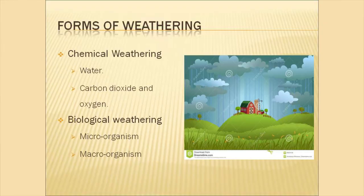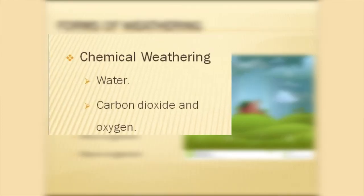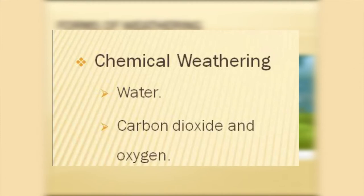Chemical weathering can be seen in the case of acid rain. Acid rain consists of certain chemicals found in the atmosphere mixed with rainwater and deposited on land. This action softens rocks, and the roots of plants are able to penetrate into rocks, breaking them into smaller fragments which eventually form soil.